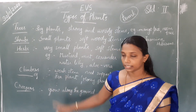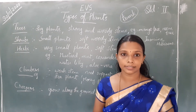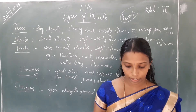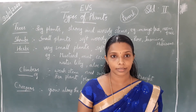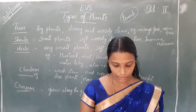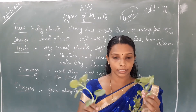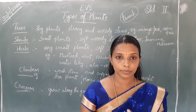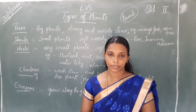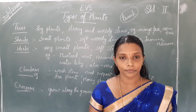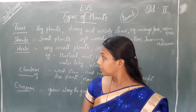Herbs are very small, soft plants with a green and soft stem. Examples are tulasi and panikurka. Herbs are used to make medicine and to add flavor to food.